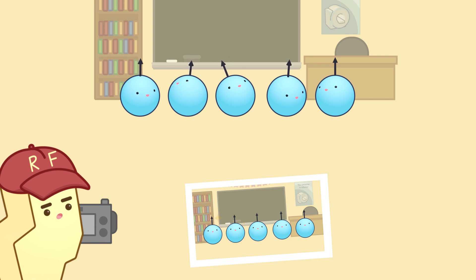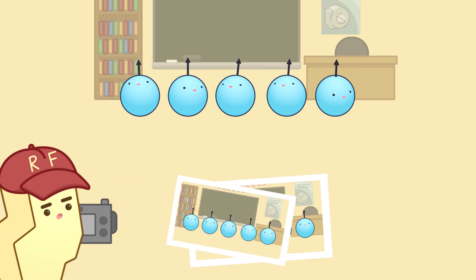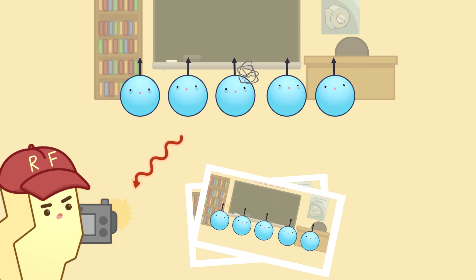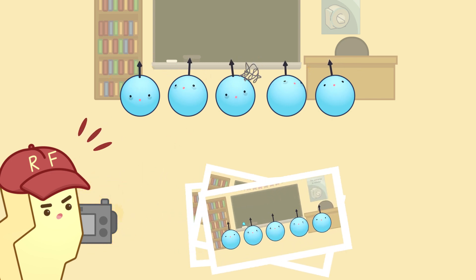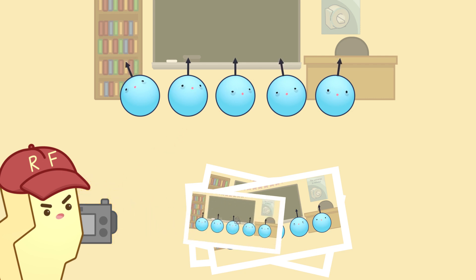We can apply additional 180-degree pulses to achieve multiple echoes, photo after photo after photo, to continue decreasing the T2 star effects. Eventually, however,